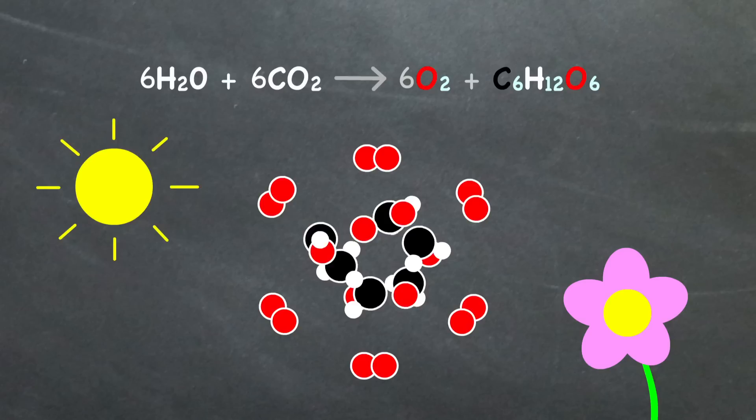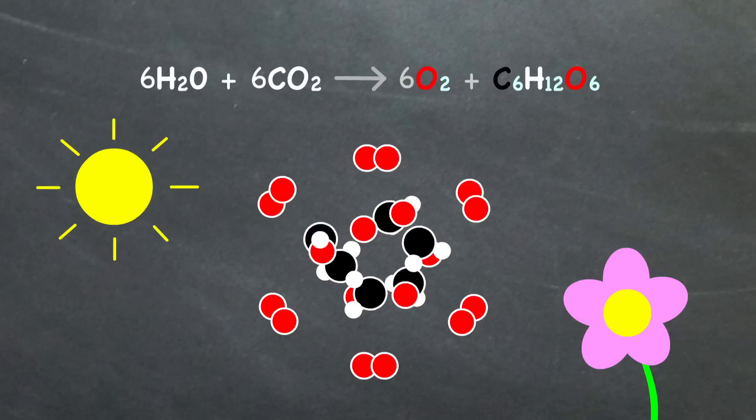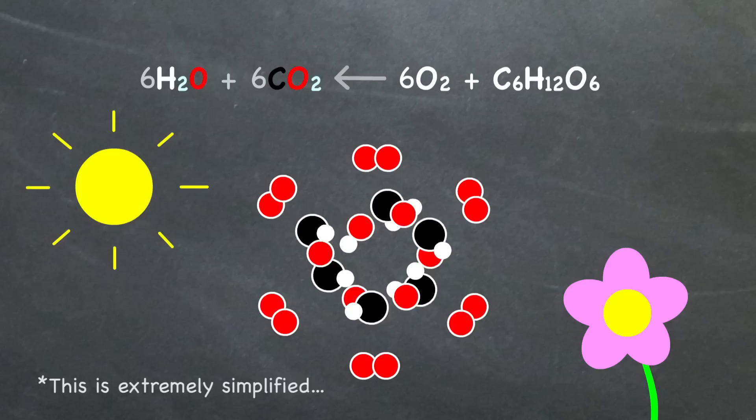For those who've taken high school chemistry or biology, you've likely come across this chemical equation. Using energy from the sun, plants take water and carbon dioxide and turn it into oxygen and glucose. At a later convenient time, the plant can reverse this process and use the energy that it previously stored in the sugar to sustain itself. Or an animal will eat the plant and it will use the energy.